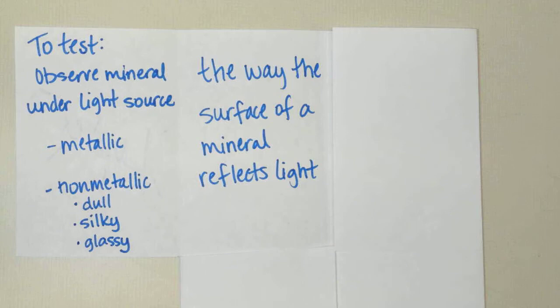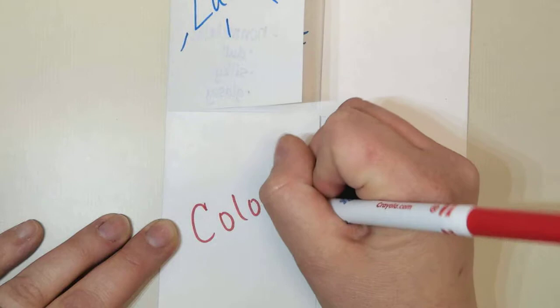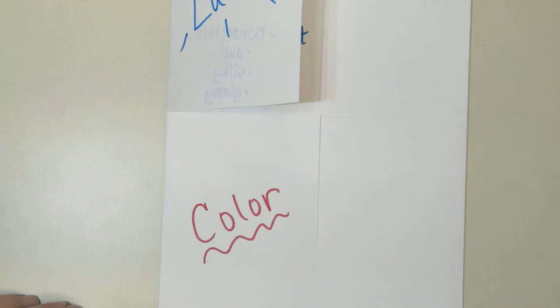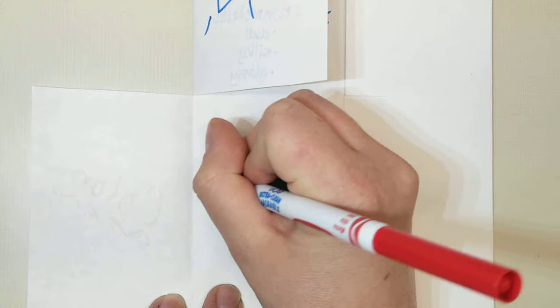The second property that we're going to look at is color. We are going to go down right underneath where we had luster, and we're going to write color. Now color is a property that we've discussed before, and it's pretty obvious, a common word we would know. It's really what color is it. Is it reddish? Is it more black, white? So color is just using the same colors that we already know. If you open up this part, on the inside, we're going to put the description. Color is simply the color of the surface of the mineral.